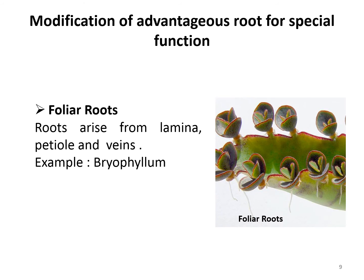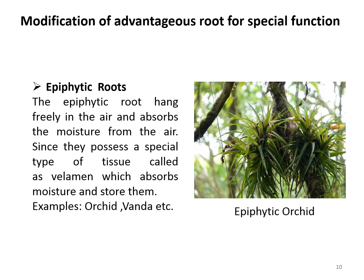Some adventitious roots are modified for reproduction. Foliar roots arise from the lamina, meaning the blade, petiole, or even veins of a plant. An example is Bryophyllum, where small tiny plants are seen emerging from the margin of the leaf, as shown in the picture.